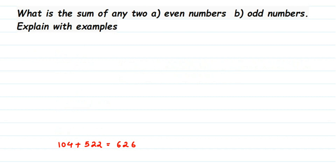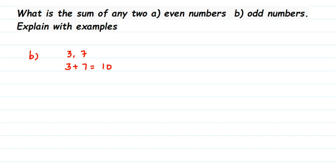For the second question, we'll take two odd numbers and try it out. Let's start with a one-digit example: 3 and 7. Three plus seven is ten, and ten is an even number. Now let's take two-digit numbers: 23 and 51. When you add them, 23 plus 51 is equal to 74.